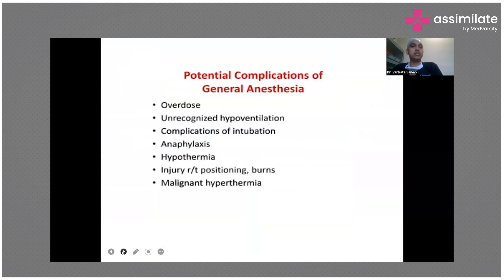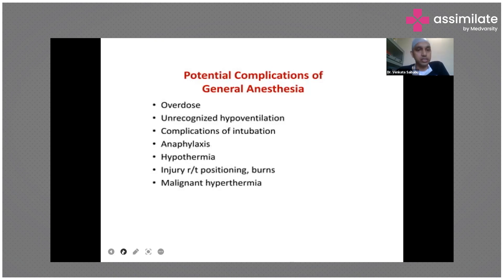Potential complications of general anesthesia include overdose, unrecognized hypoventilation, complications of intubation, anaphylaxis, hypothermia, injury due to positioning and burns, and malignant hyperthermia. Burns can occur because of the electrocautery used during surgery. Complications of intubation include vocal cord injuries, post-operative sore throat, change in voice, edema, laryngospasm, and bronchospasm.